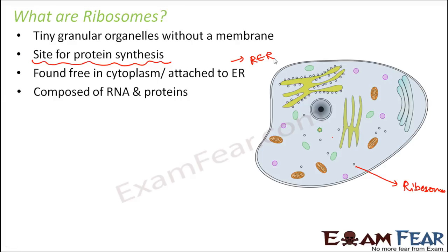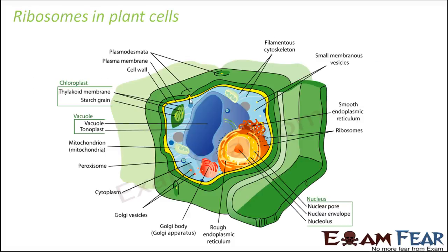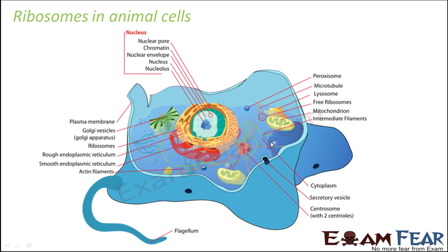Ribosomes are composed of RNA and proteins, and they also contain the enzymes needed for protein synthesis. In plant cells you can see these small granules present throughout. In animal cells as well, ribosomes appear as dotted structures - some are free in the cytoplasm and others are attached to the rough endoplasmic reticulum.